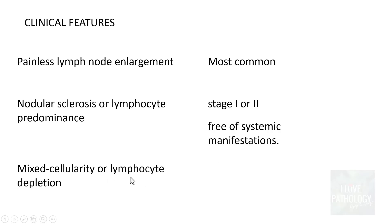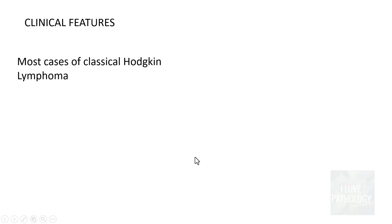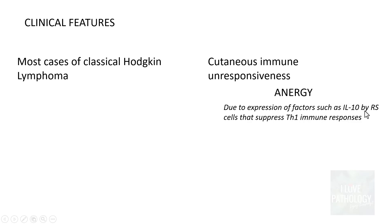Whereas the disseminated ones — mixed cellularity, lymphocyte depletion, stage three and stage four — often have systemic manifestations. If you have painless lymph node enlargement along with systemic manifestations, you should be thinking of stage three or stage four Hodgkin Lymphoma, which are often mixed cellularity or lymphocyte depletion types. Most cases of classical Hodgkin Lymphoma also have cutaneous immune unresponsiveness, referred to as anergy. This is because Reed-Sternberg cells secrete cytokines including interleukin-10, which suppresses T-helper-1 immune responses.